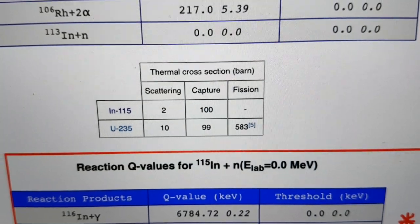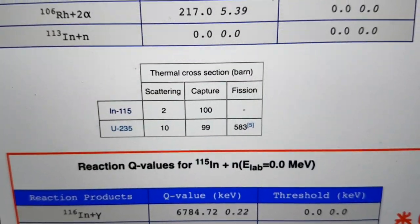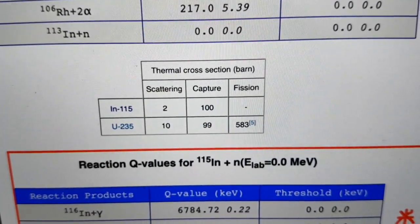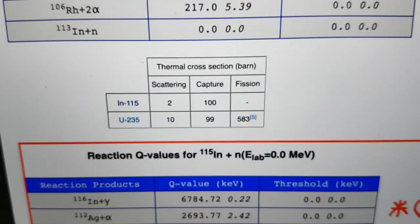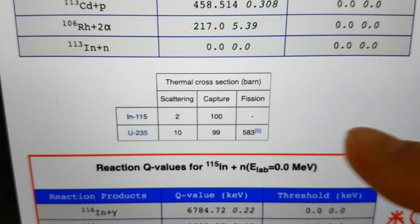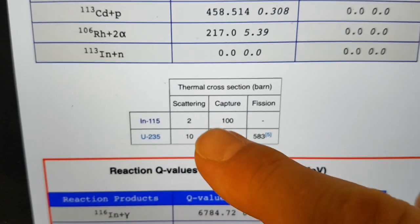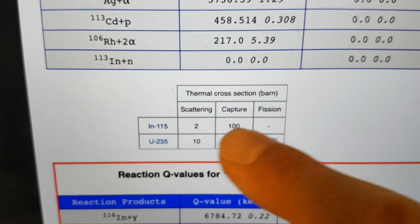And it's even higher than uranium-235. Of course, from the fission standpoint, uranium-235 actually fissions and has a higher thermal cross-section in barns for that process. But what we're interested in is this one.